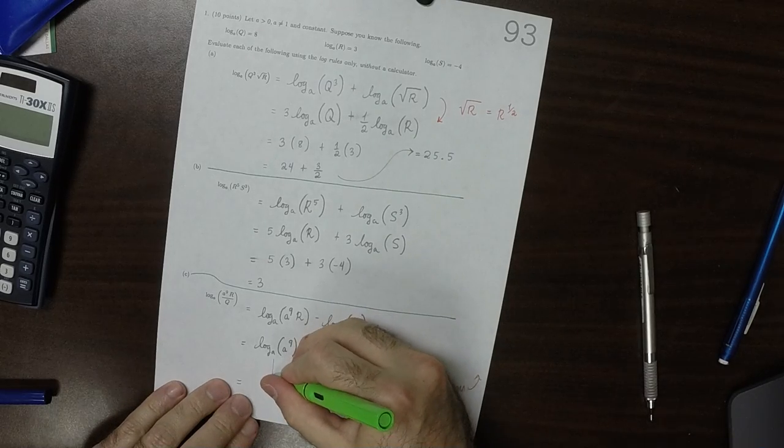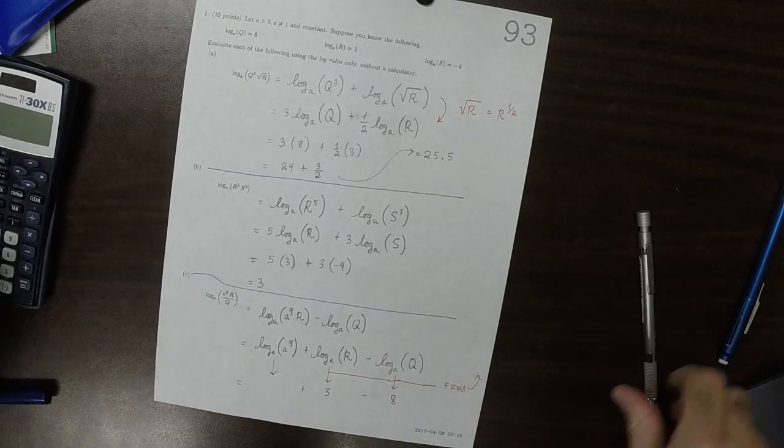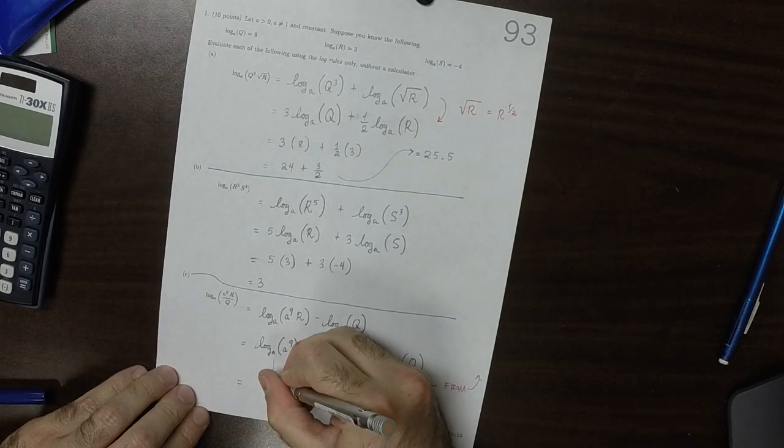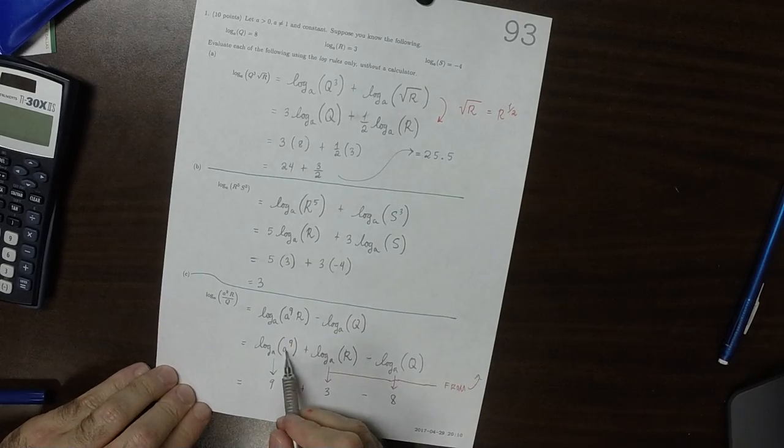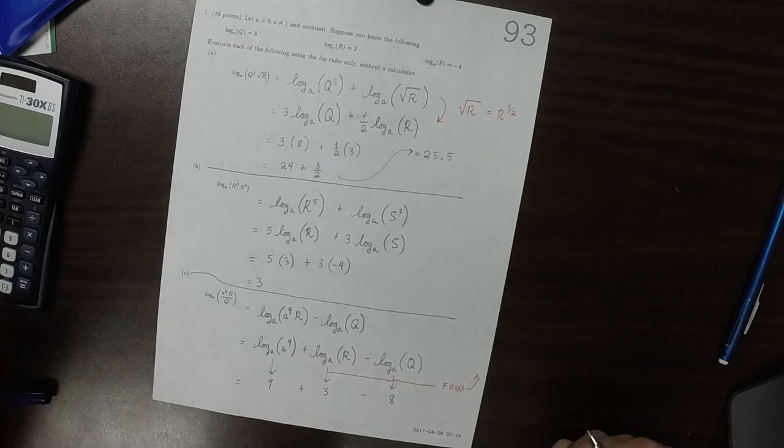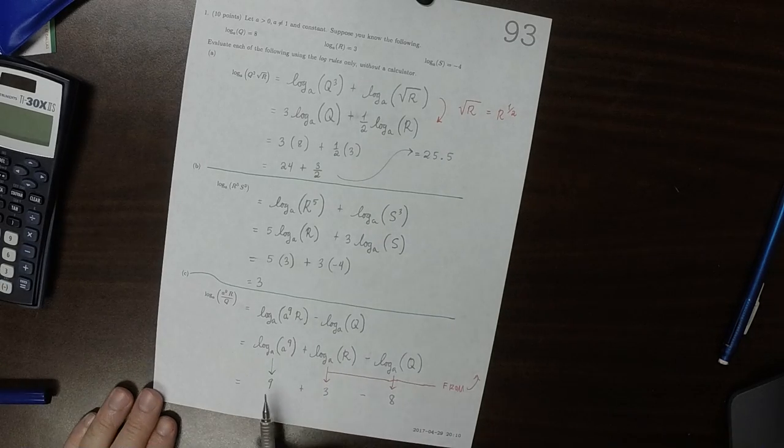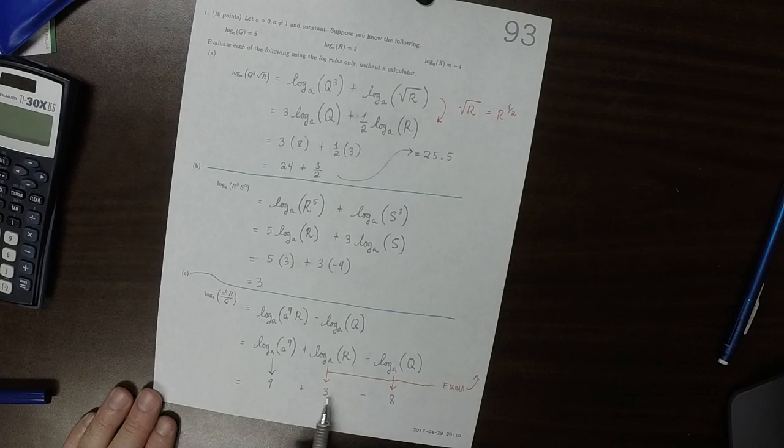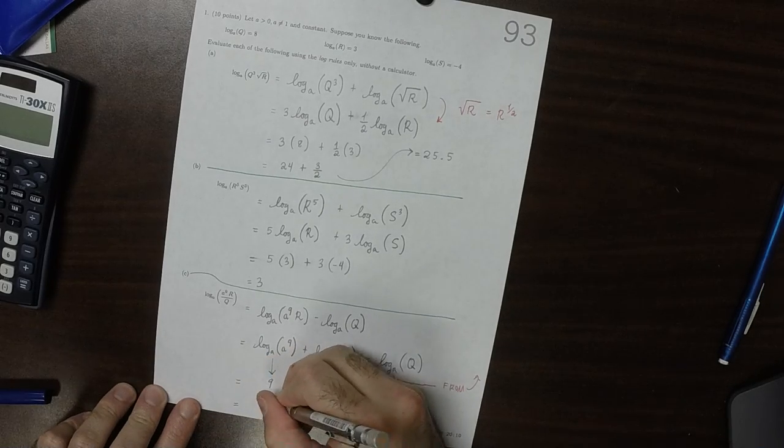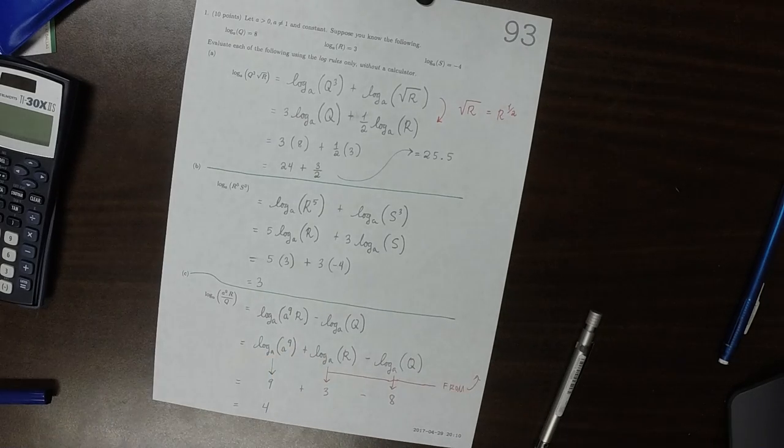This log base a of a to 9, well that's just 9 because exponential base a and logarithm base a are inverse functions. So that would be 9 plus 3 is 12 minus 8, so 8 is 4. That's the answer.